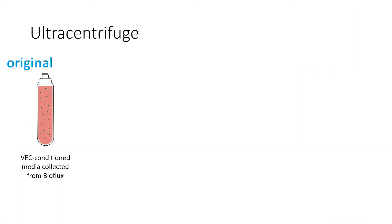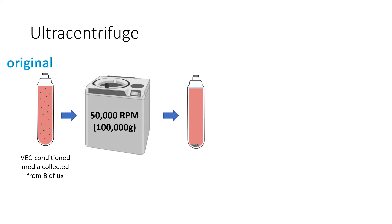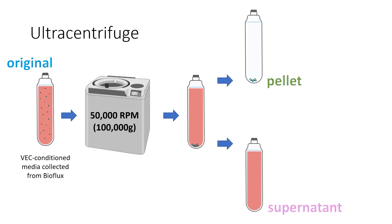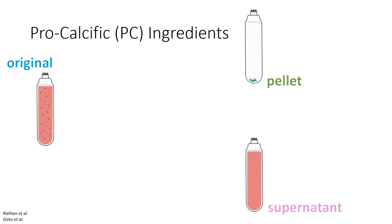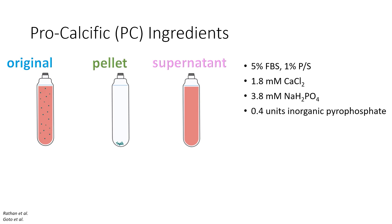Upon termination of BioFlux with VECs, we collected the VEC conditioned media, which I will call the original group. We placed a portion of this media in an ultracentrifuge to obtain a pellet of exosomes, which were then isolated by removing the supernatant. The exosome pellet was re-suspended in fresh procalcific media, and the procalcific ingredients were also added to the original group as well as the non-exosomal supernatant group. The procalcific ingredients consisted of 5% FBS and 1% pen-strep, 1.8 mM of calcium chloride, 3.8 mM sodium dihydrogen phosphate, and 0.4 units of inorganic pyrophosphate. These ingredients were introduced to induce VIC calcification. So now we have three groups: the original, exosome pellet, and cytokine supernatant, labeled as ORG, EX, and CY for short.